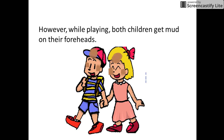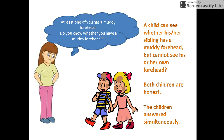However, while playing, both the children get mud on their foreheads. The mother says, at least one of you has a muddy forehead. She then asks the children to answer yes or no to the question: Do you know whether you have a muddy forehead? Assume that a child can see whether his or her sibling has a muddy forehead, but cannot see his or her own forehead.